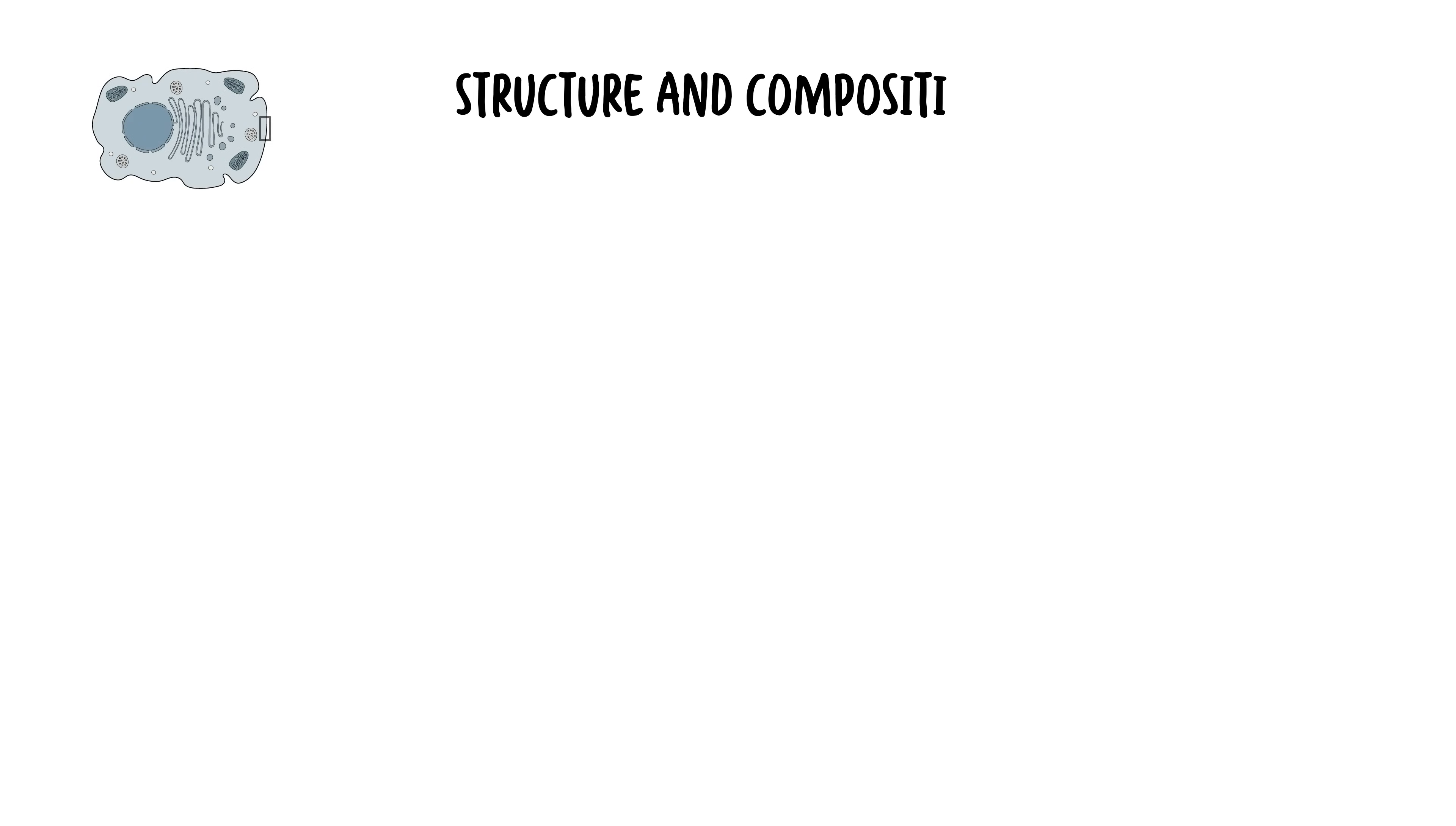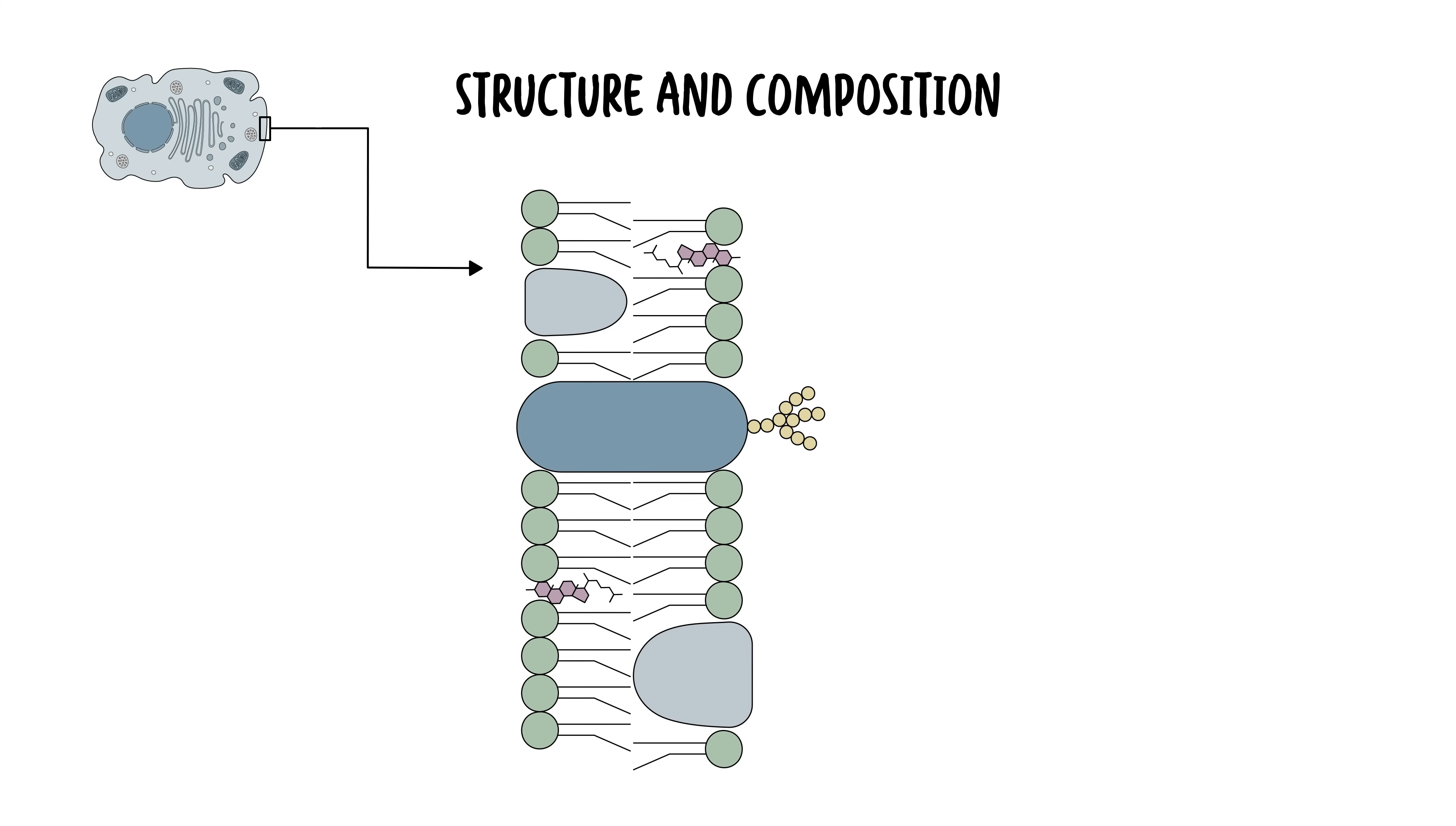So, let's talk about the structure and composition of the cell membrane. The cell membrane is primarily composed of a lipid bilayer interspersed with proteins, carbohydrates and cholesterol, each contributing to its unique properties.